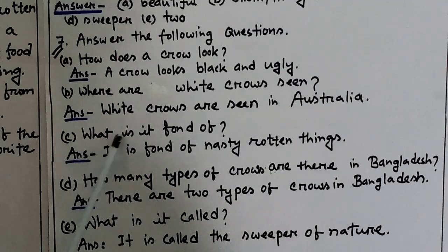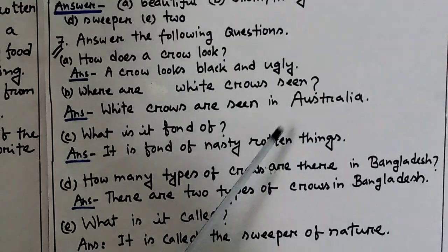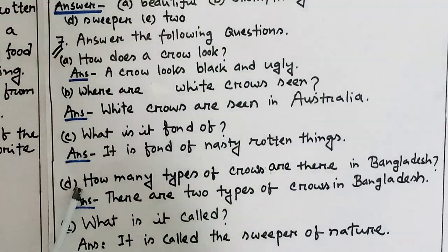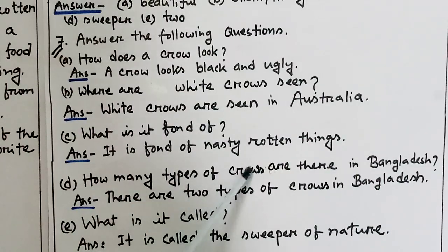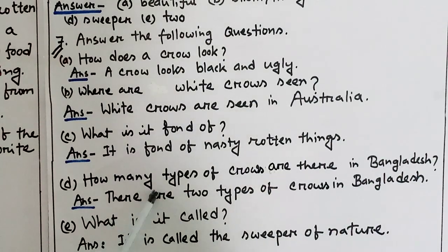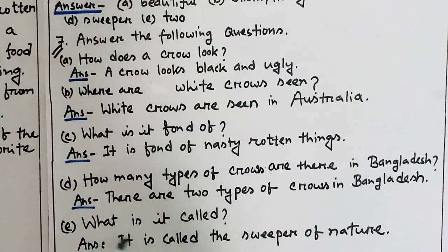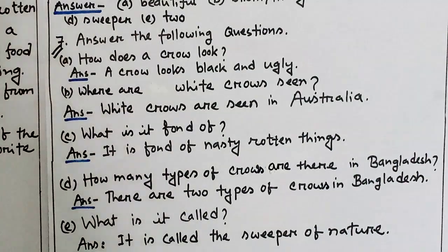Question C: What is it fond of? Answer: It is fond of nasty, rotten things. Question D: How many types of crows are there in Bangladesh? Answer: There are two types of crows in Bangladesh. Question E: What is it called? Answer: It is called the sweeper of nature.